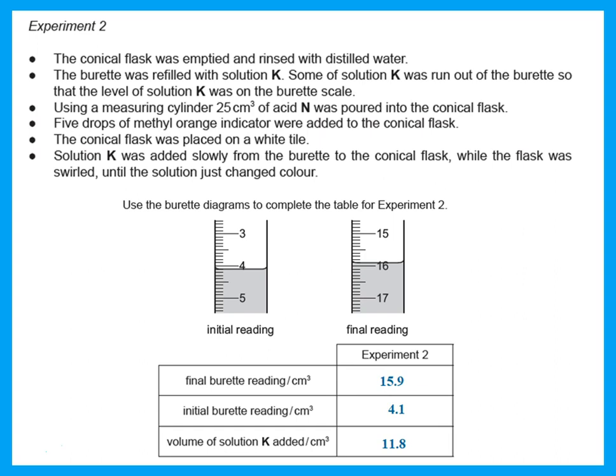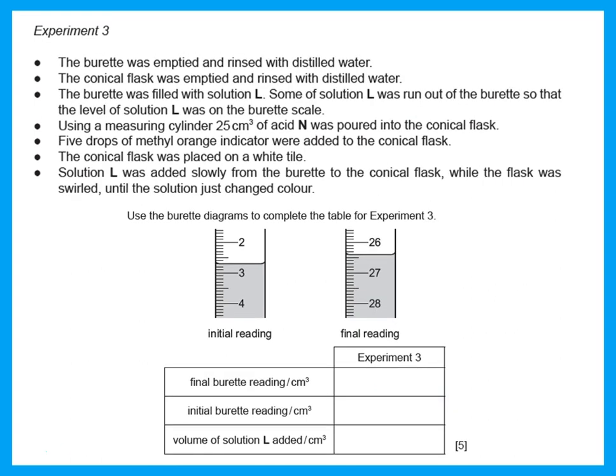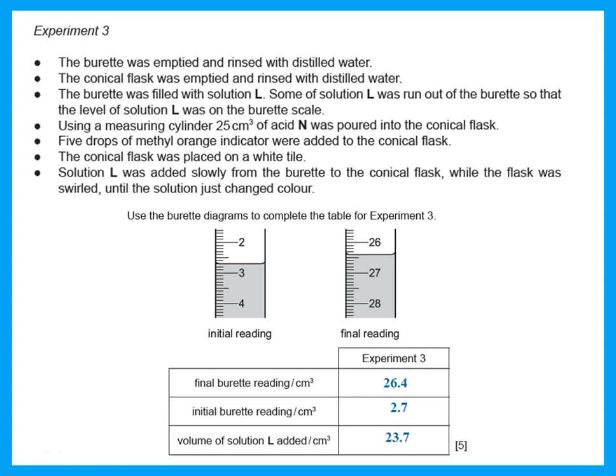In experiment three, the burette was emptied and rinsed with distilled water, and the conical flask was rinsed. The burette was then filled with solution L. Some of solution L was run out of the burette, acid N was added with five drops of methyl orange, and burette readings were recorded.